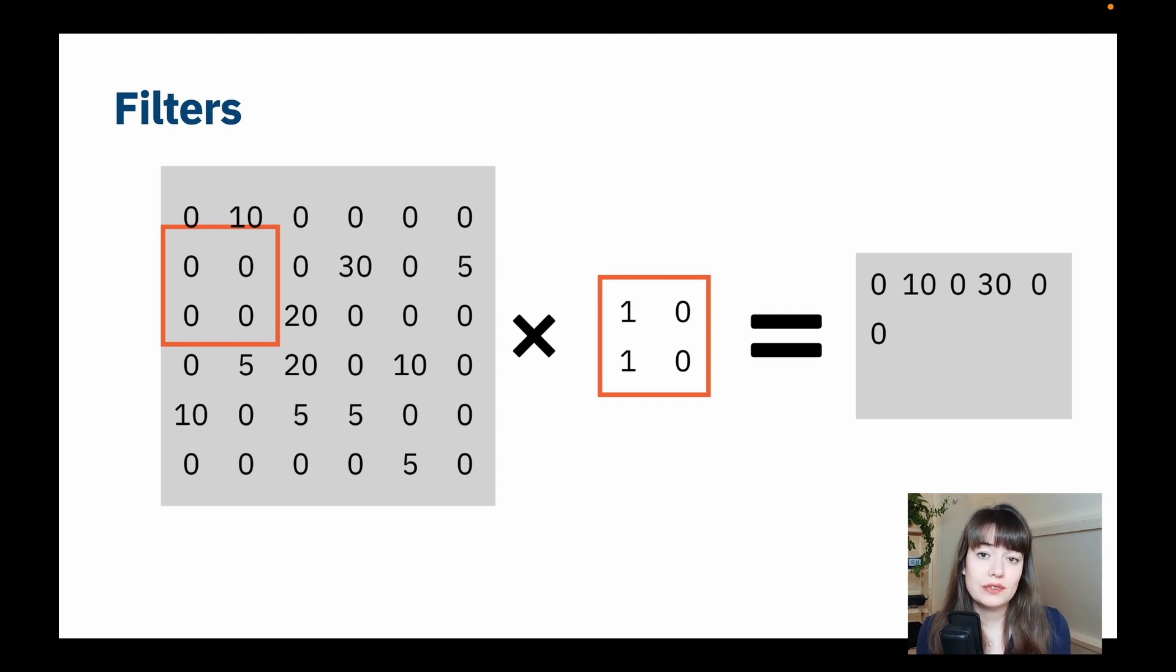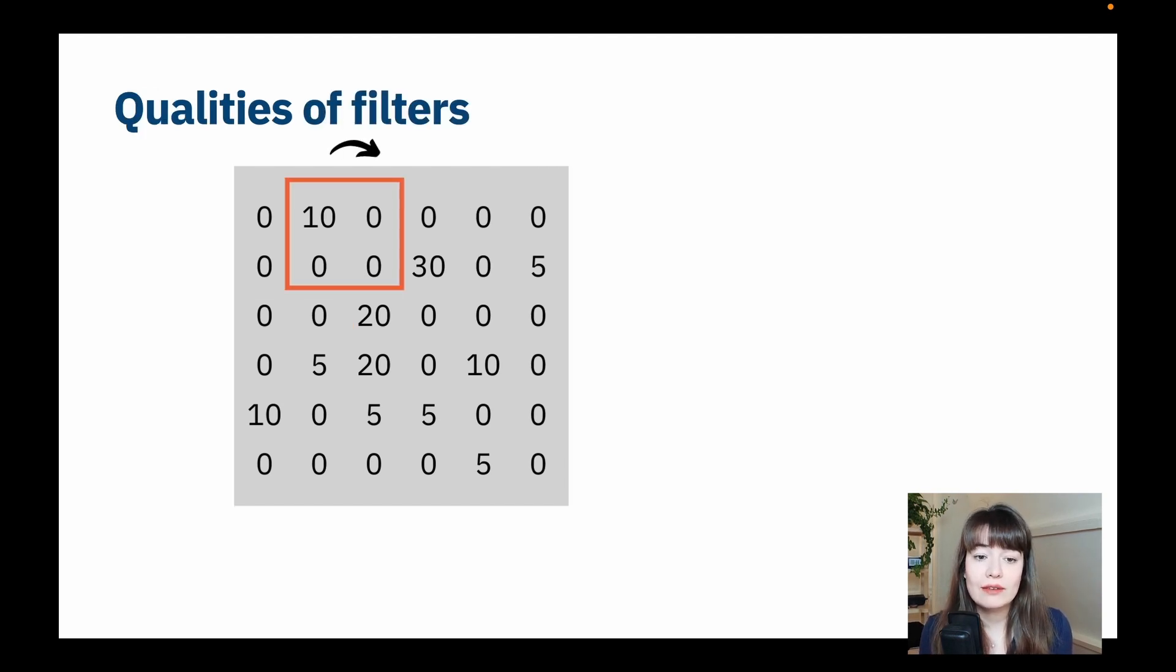There are different qualities of these filters, though. Of course, you don't always have to just go one step to the side or one step down. This is called a stride. And you can set different strides for your filters. So if you set your stride to be 2, what's going to happen is you're going to jump 2 places to the right or 2 places to the next place.